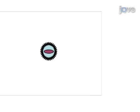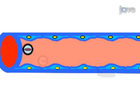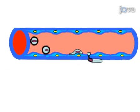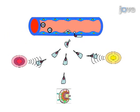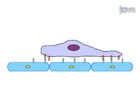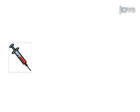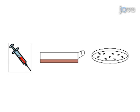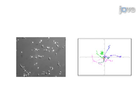T-lymphocyte migration occurs during homing to lymphoid organs, exit from the vasculature, and entry into peripheral tissues. This process involves the adhesive interaction of the T-cell surface with other cells. To examine this phenomenon in vitro, human T-lymphocytes are isolated, cultured, and placed on tissue culture plates coated with the adhesive protein ICAM-1 and chemokine SDF-1. Images of T-lymphocyte migration can then be acquired and analyzed.